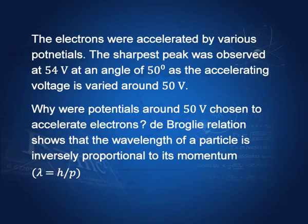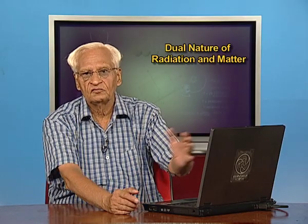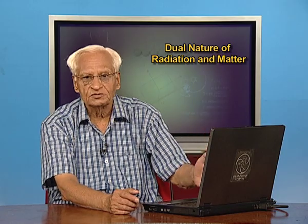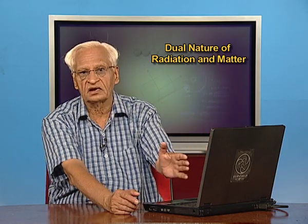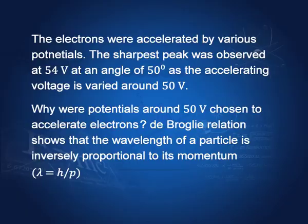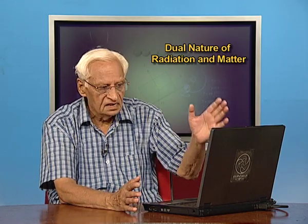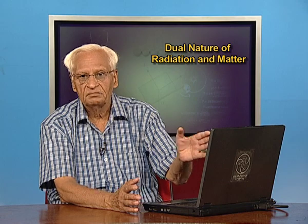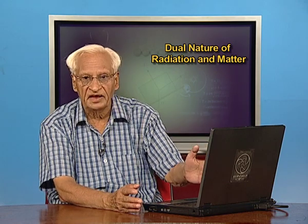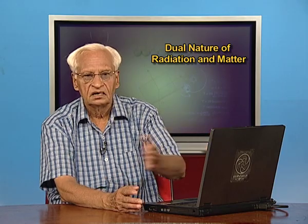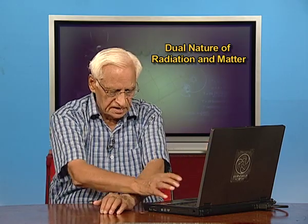The voltage was varied from about 45 to 75 volts, and at 54 volts at an angle of 50 degrees a very sharp peak was detected. That means the electron was not behaving like a particle — it was behaving like a wave. We can calculate from the experimental data what the wavelength of the electron is.